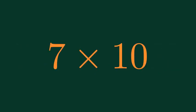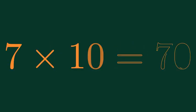What is 7 times 10? 7 times 10 is equal to 70.